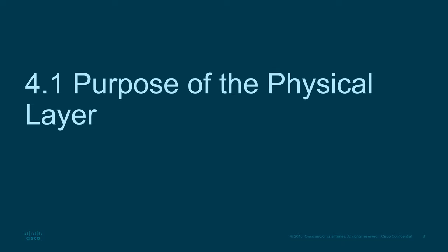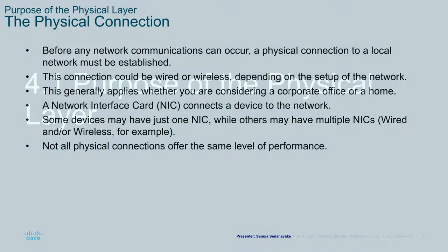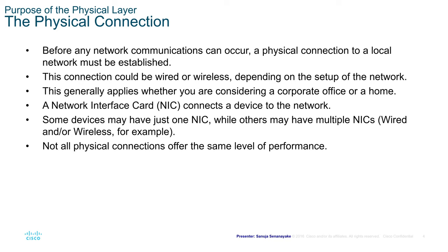First we will look at the purpose of the physical layer. Before any network communications can occur, a physical connection to a local network must be established. This connection could be wired or wireless depending on the setup of the network, and this generally applies whether you are considering a corporate or office network. A network interface card or NIC connects a device to the network. Some devices may have just one NIC while others may have multiple NICs — it could be wired and no wireless. Most home computers will have one NIC, while servers and some network printers and devices may have multiple NICs. Not all physical connections offer the same level of performance, as we will learn through this module.